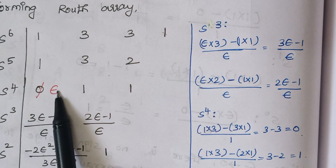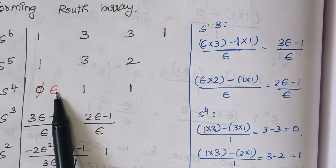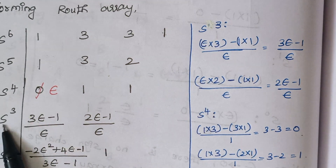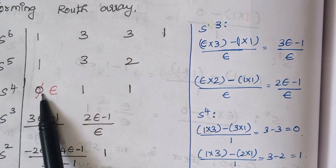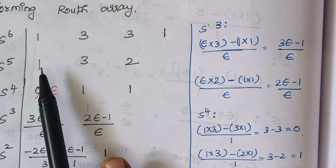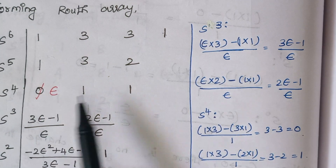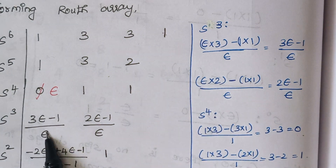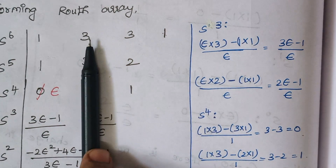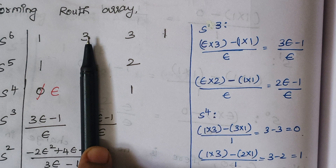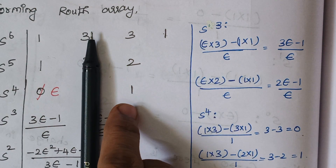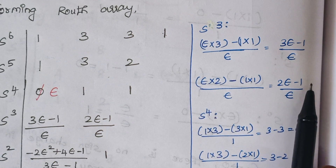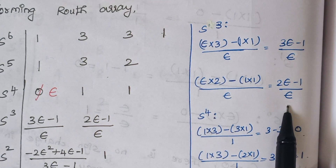Replacing the 0 by epsilon, the next step is finding the s^3 row. The first term is (ε×3 − 1×1) / ε = (3ε − 1) / ε. The second term, hiding that column and multiplying: (ε×2 − 1×1) / ε = (2ε − 1) / ε.